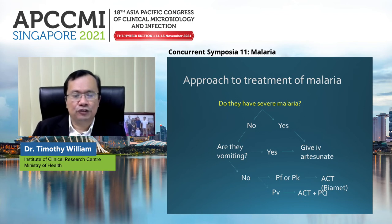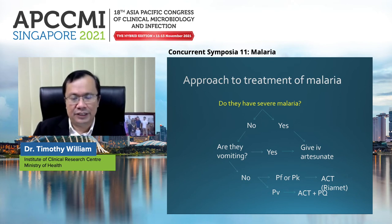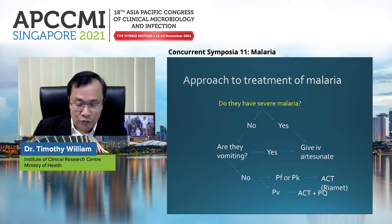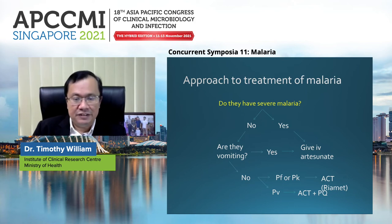This is the approach for treatment of malaria. First, does the patient have severe malaria? If yes, give IV artesunate. If no severe malaria, are they vomiting? If yes, give IV artesunate. If not, look at whether they have PF or PK — give ACT or Riamet. In PV, give ACT and primaquine.